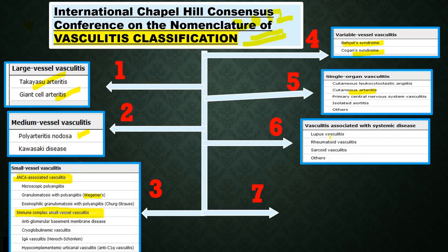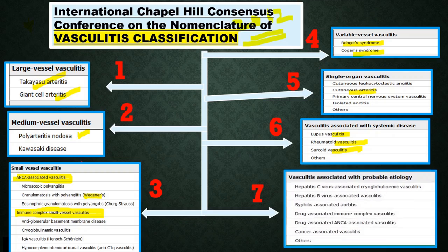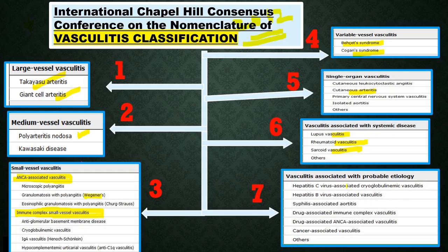Another classification is vasculitis associated with systemic disease — that is lupus vasculitis, rheumatoid vasculitis, sarcoid vasculitis, and other vasculitides associated with systemic diseases.